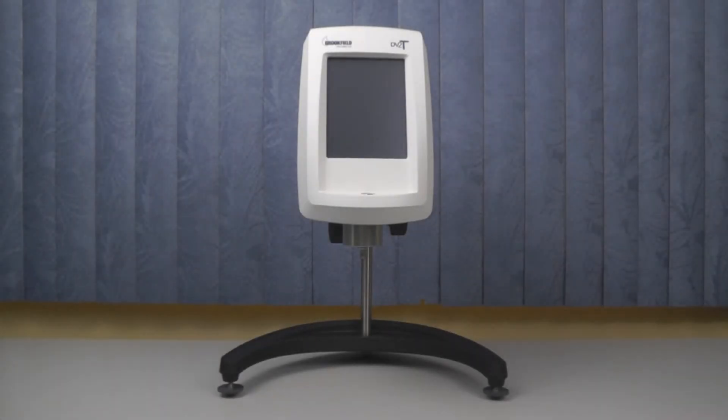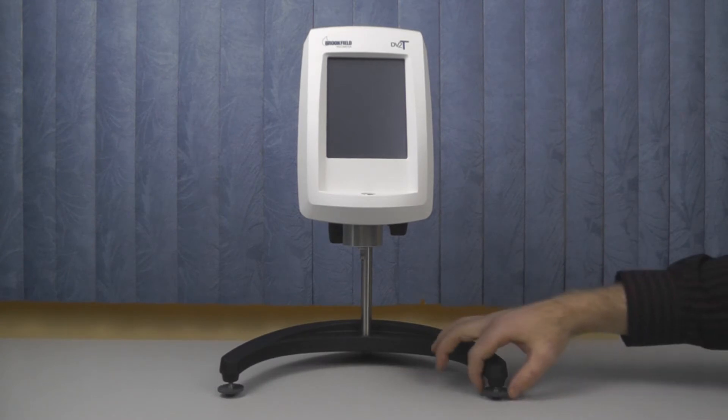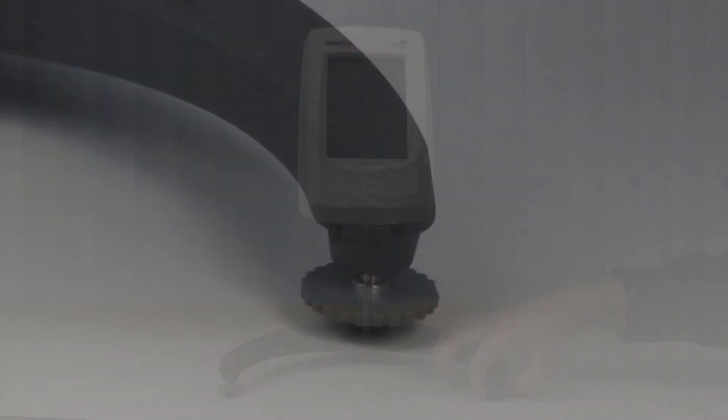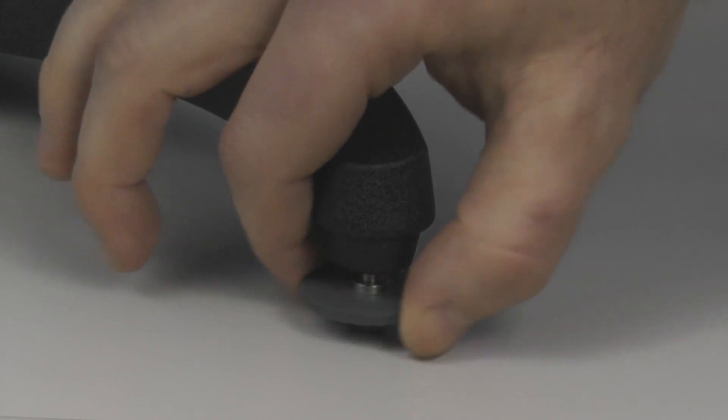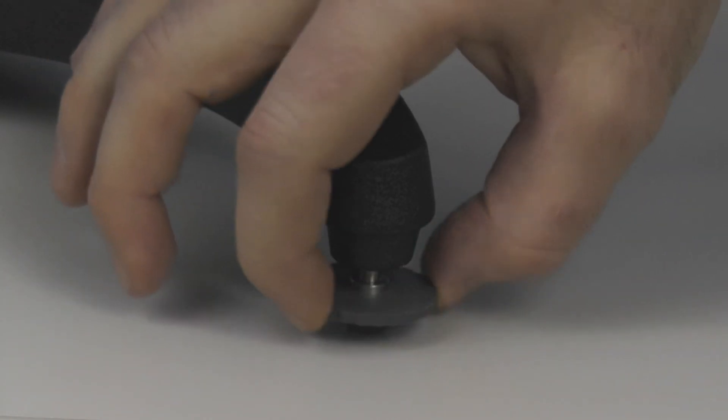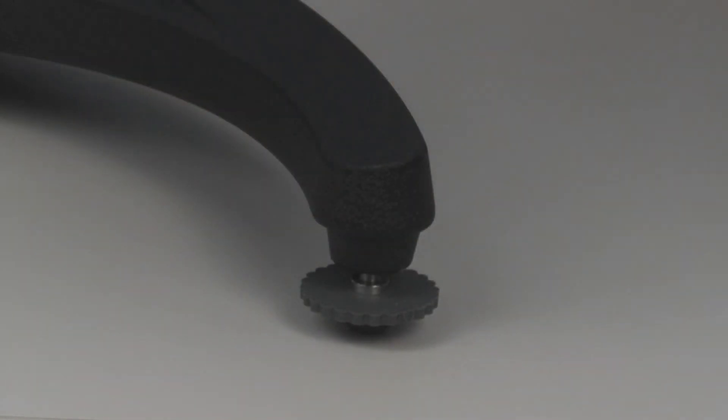You can then fine-tune the viscometer using the leveling screws on the base. Turning a leveling screw clockwise will increase the height of the stand, while turning it counter-clockwise will decrease the height.